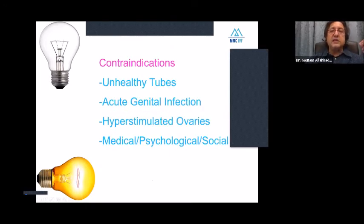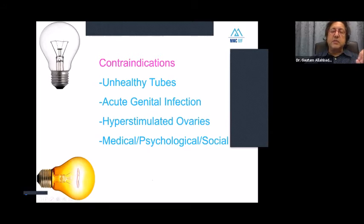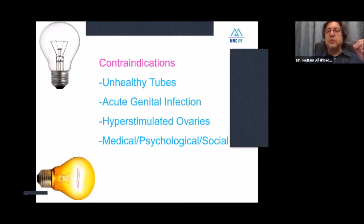Contraindications for IUI: any form of acute genital infection, any tubal factor or unhealthy tubes, and a relative contraindication is hyperstimulated ovaries. In developed settings like Dubai, if a patient has more than three follicles after stimulation, IUI is not performed — simply to prevent multiple pregnancies, which are considered a complication of assisted reproduction. Medical, psychological, and social indications also exist.